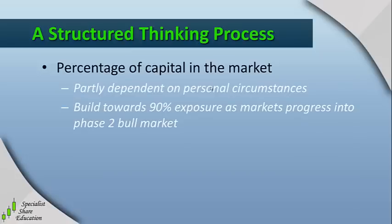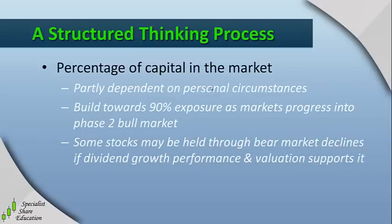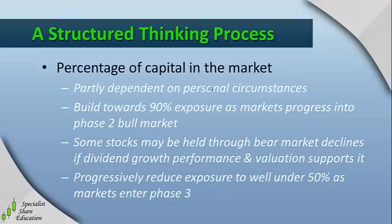As we progress into phase two bull markets, we're looking to build our capital up to perhaps 90% exposure, which is the way that I tend to do it. Now some stocks may be held through bear markets, through phase four declines, if their dividend growth, performance, and valuation supports it — this is not necessarily a matter of dumping everything as we go into a phase four decline because some stocks can still hold up quite well. We will look to progressively reduce exposure to well under 50% as the market enters phase three, and how much we come down under 50% depends on how significant the market decline looks as though it's going to be.